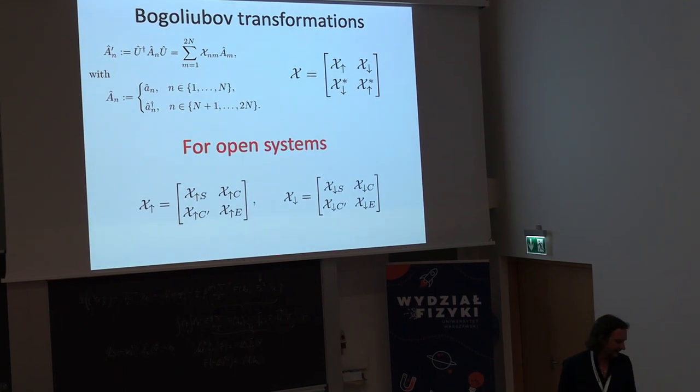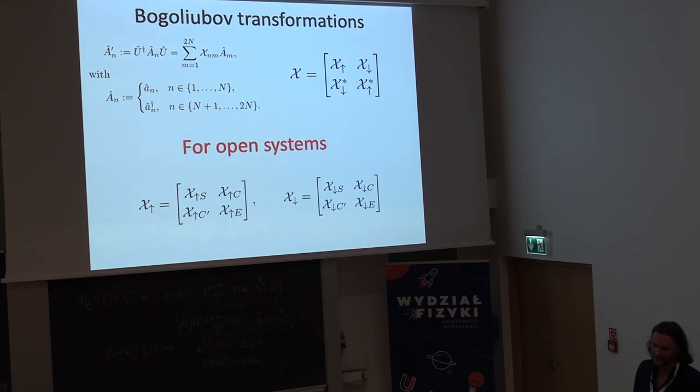A thing which is maybe not so used in field theory, but can also be useful if we consider an open system scenario. In which we split these operators, like the annihilation operators into two sets. One set is our system and another set is the environment. So, somehow this might be artificial, but it also might have some reasoning behind. And if we do this, then nothing changes structurally because commutation relations are the same. But somehow we can say that each block is now split between system, environment and some correlation terms. And the same happens here.